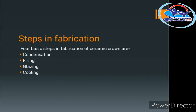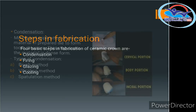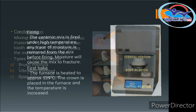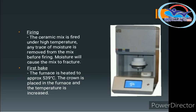The four basic steps of ceramic crown fabrication are: condensation, firing, glazing, and cooling. Condensation is the step where ceramic material is built up and shaped to take the form of the tooth. In this step, the material is densely formed into the desired tooth shape.